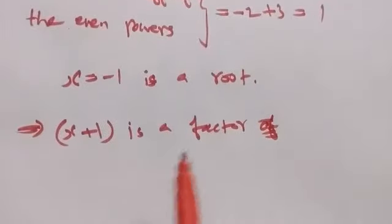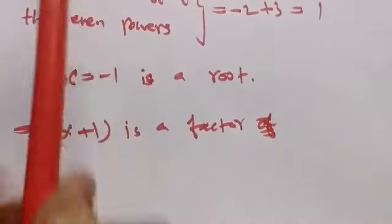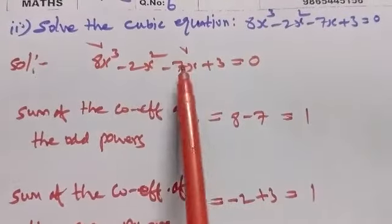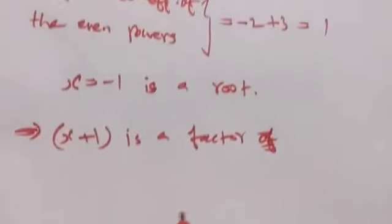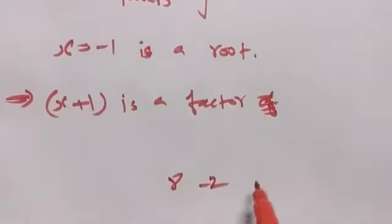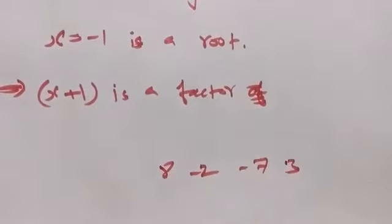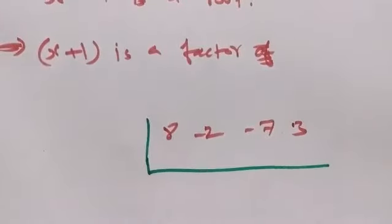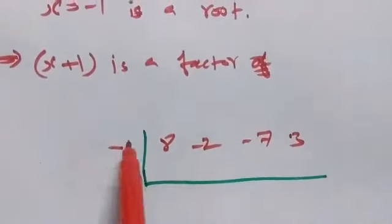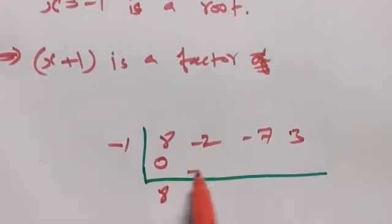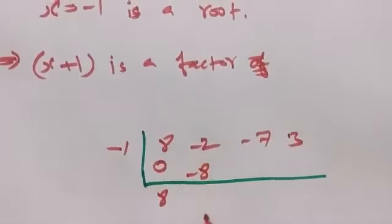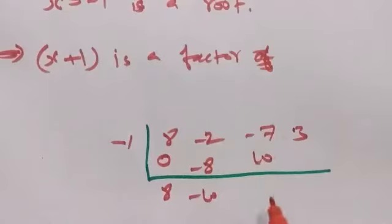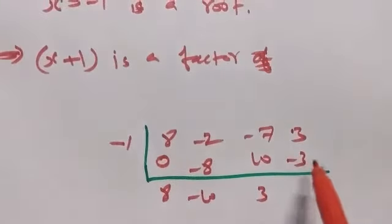Using synthetic division with -1: 8, -2, -7, 3. Bring down 8. Then 8 × (-1) = -8, so -2 + (-8) = -10. Then -10 × (-1) = 10, so -7 + 10 = 3. Then 3 × (-1) = -3, so 3 + (-3) = 0.